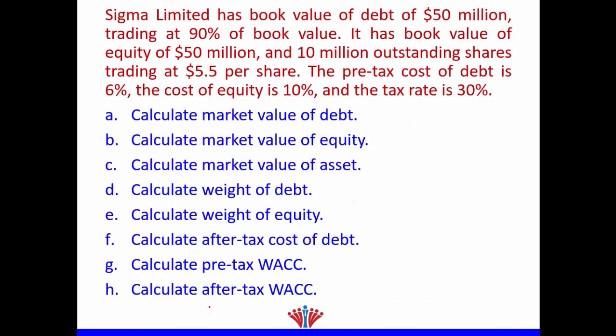Let's look at an example. Sigma Limited has a book value of debt of $50 million, trading at 90% of book value. It has a book value of equity of $50 million and 10 million outstanding shares, trading at $5.50 per share.